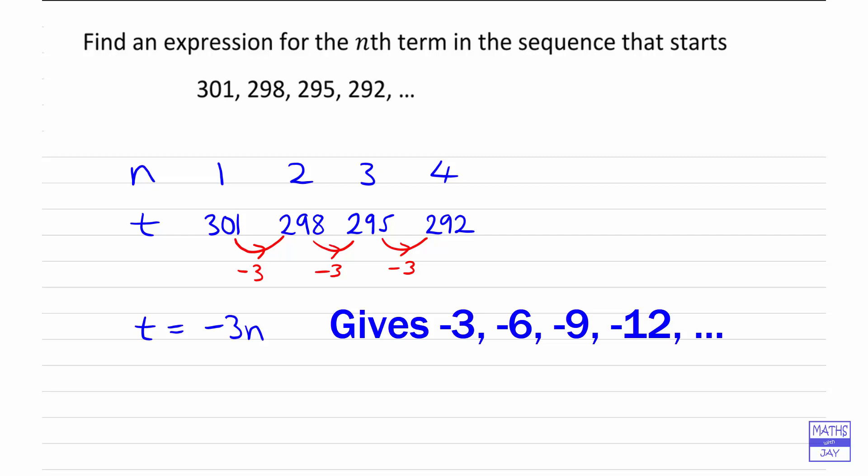The good thing about that is those numbers are going down in 3s, but they're the wrong numbers, aren't they? We need to start with a much higher number. Instead of starting with -3, we need to start with 301. So we need to have a look at how we're going to find what we need to add on to start at the right number.